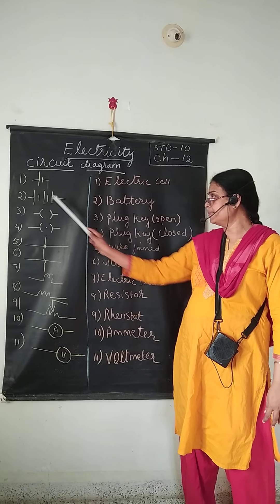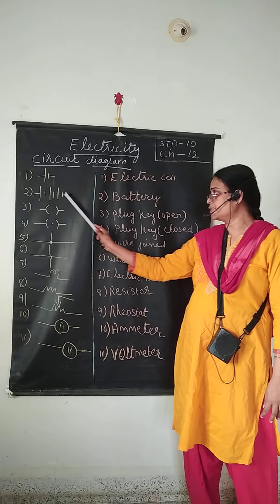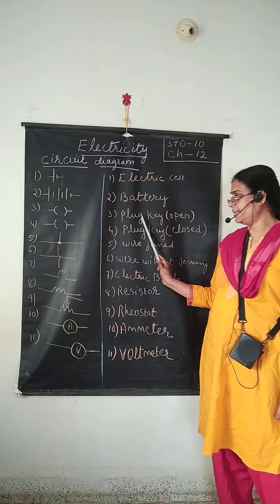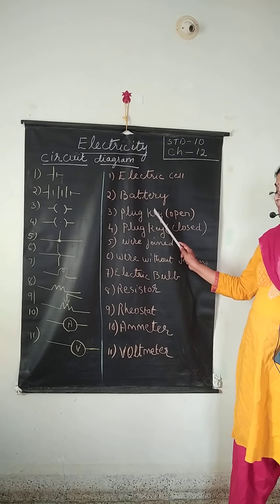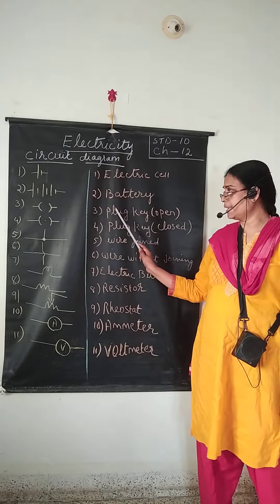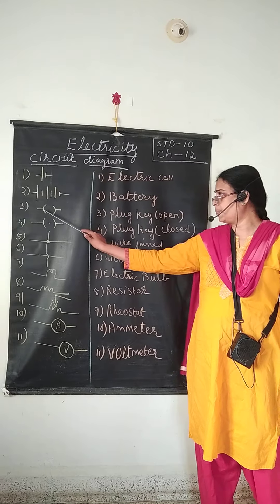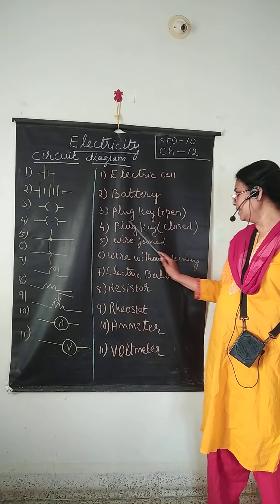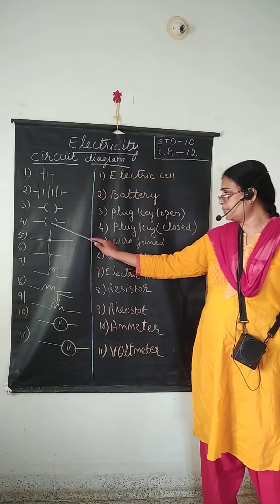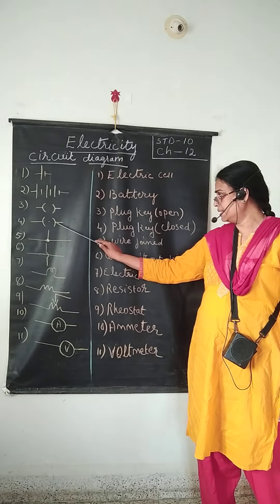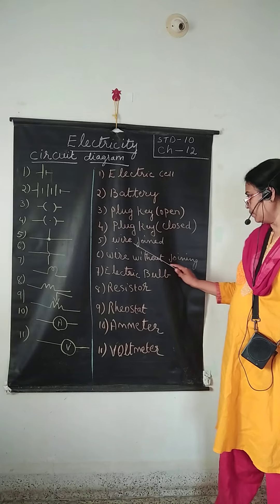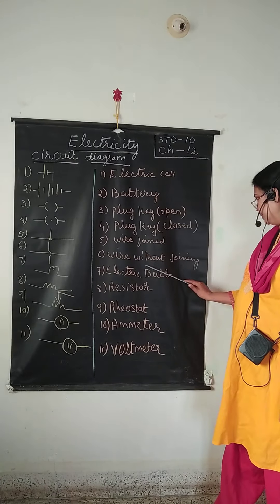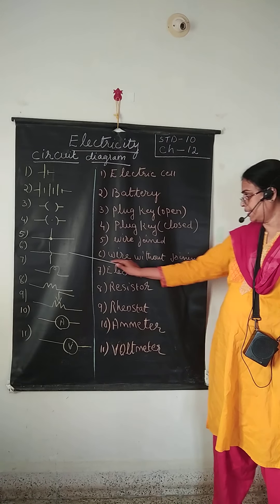The symbol for a battery is many cells joined together. Now, the plug key — in the circuit diagram you can see a plug key which is open. The symbol is like this. And if it is a closed plug key, the symbol is this.